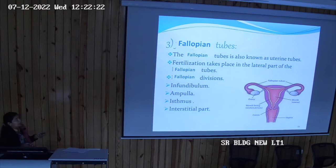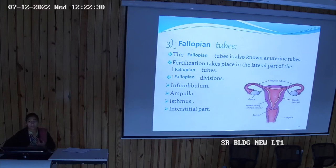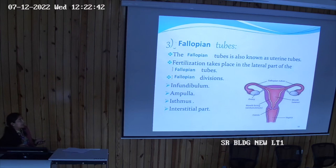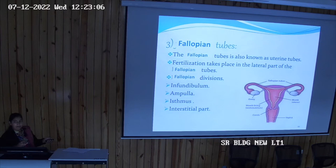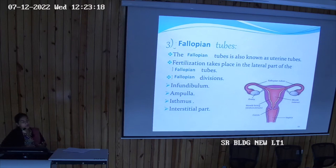The purpose of the fallopian tube is transfer of ova and fertilization, which also takes place in the fallopian tube. It is divided into four parts: infundibulum, ampulla, isthmus, and interstitial. The interstitial part is embedded towards the body of the uterus. The isthmus is the junction between the uterus and the fallopian tube. Then comes the ampulla and infundibulum, and the lateralmost fimbrial end catches the ova formed from the ovaries.